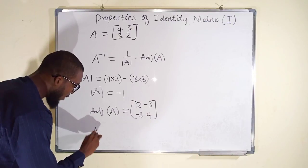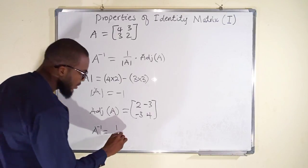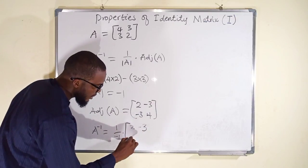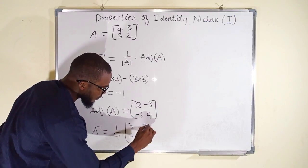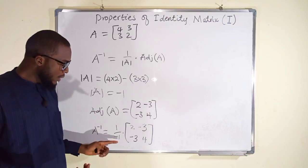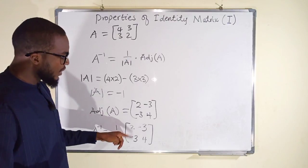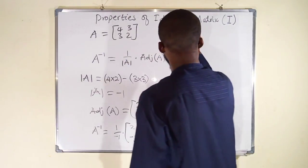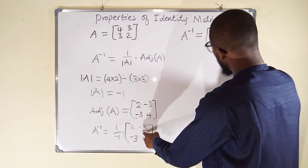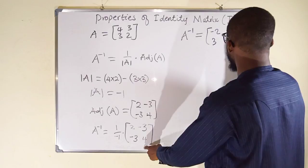Applying the formula, A⁻¹ = (1 / −1) × [2, −3; −3, 4]. Since 1 over −1 is −1, we use −1 as a scalar to multiply each entry, changing all signs. Therefore A⁻¹ = [−2, 3; 3, −4].